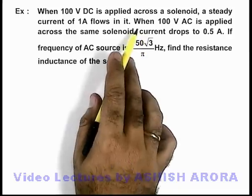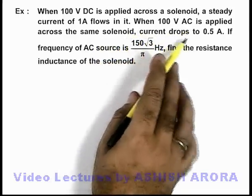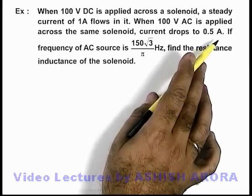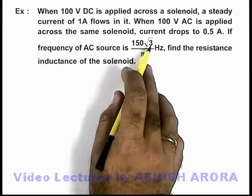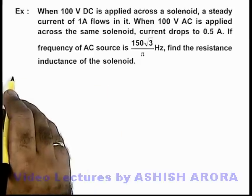And it is saying when 100 volt AC is applied across the same solenoid, the current drops to 0.5 ampere. We are given also with the frequency of AC source which is 150√3/π Hz. We are required to find the resistance and inductance of the solenoid.